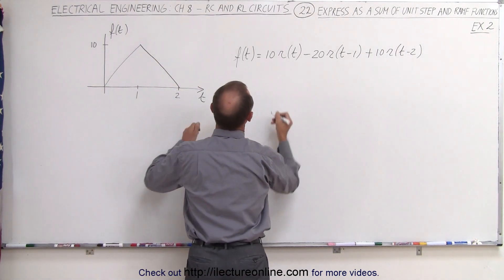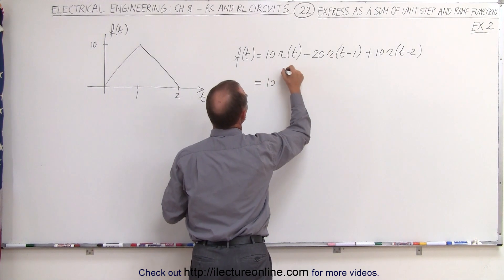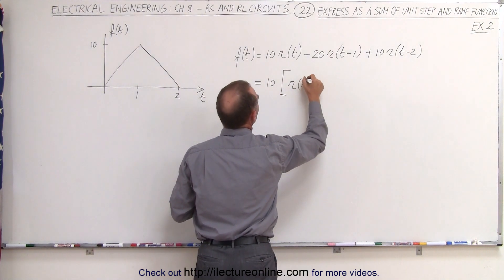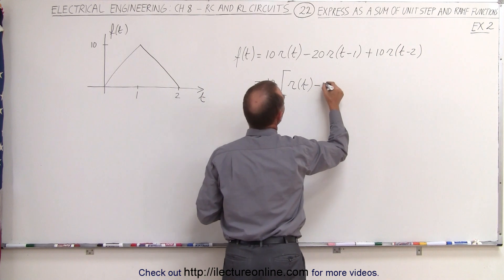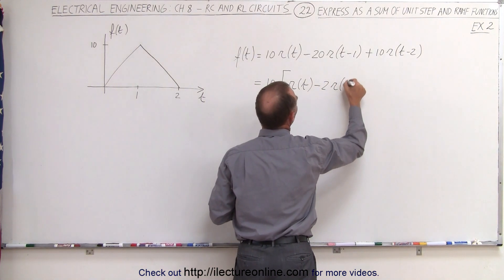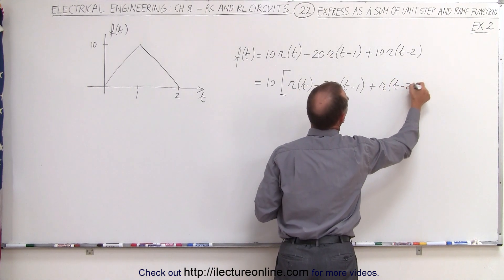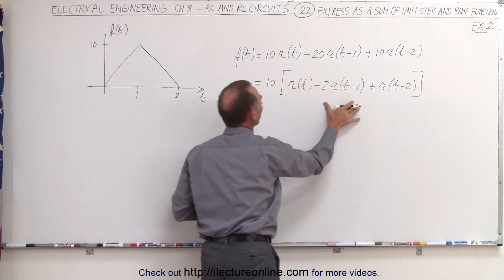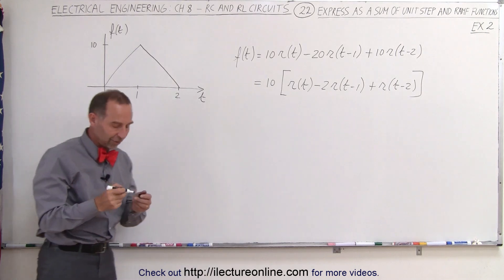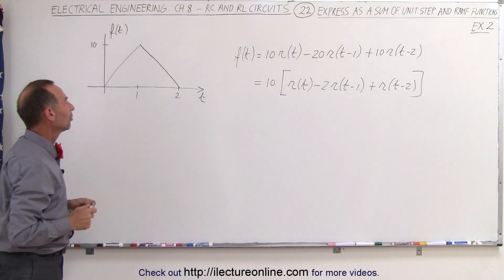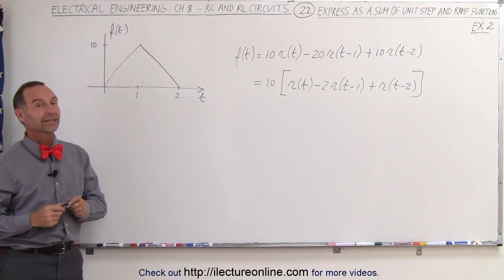And if you then factor out a ten, say that this is equal to ten times the RAM function minus two times the RAM function offset by one second, plus the RAM function offset by two seconds, and that also is a nice compact form to express the input function right here, and that's how it's done.